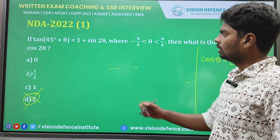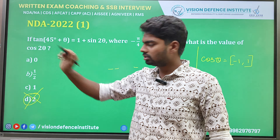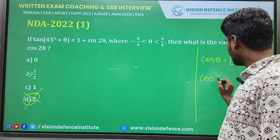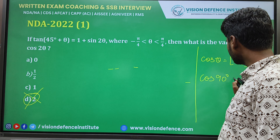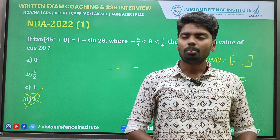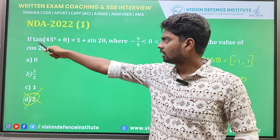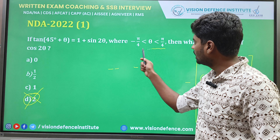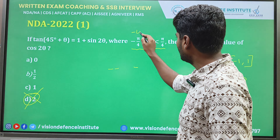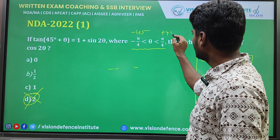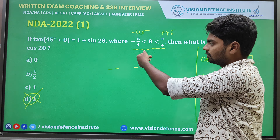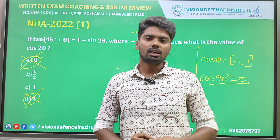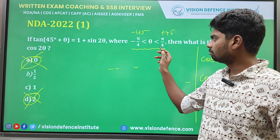If cos2θ = 0, then 2θ = 90 degrees, meaning θ = 45. But θ = 45 is not valid here because the constraint says θ must be strictly less than +45. So this option from -45 to +45 excludes 45 itself.